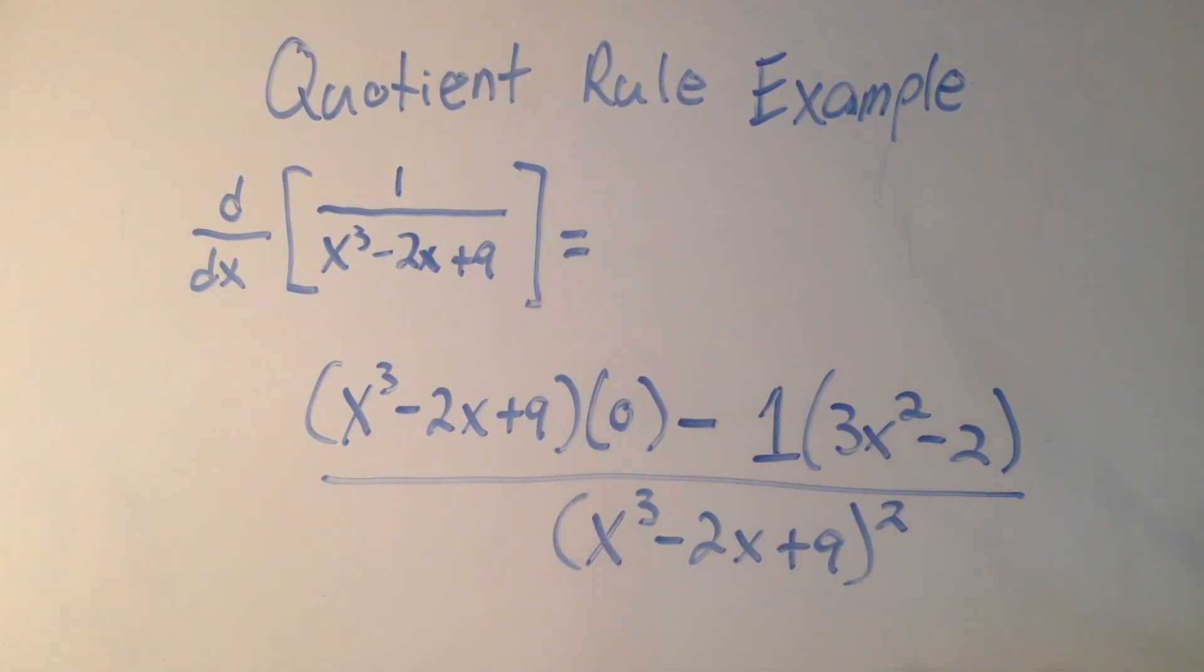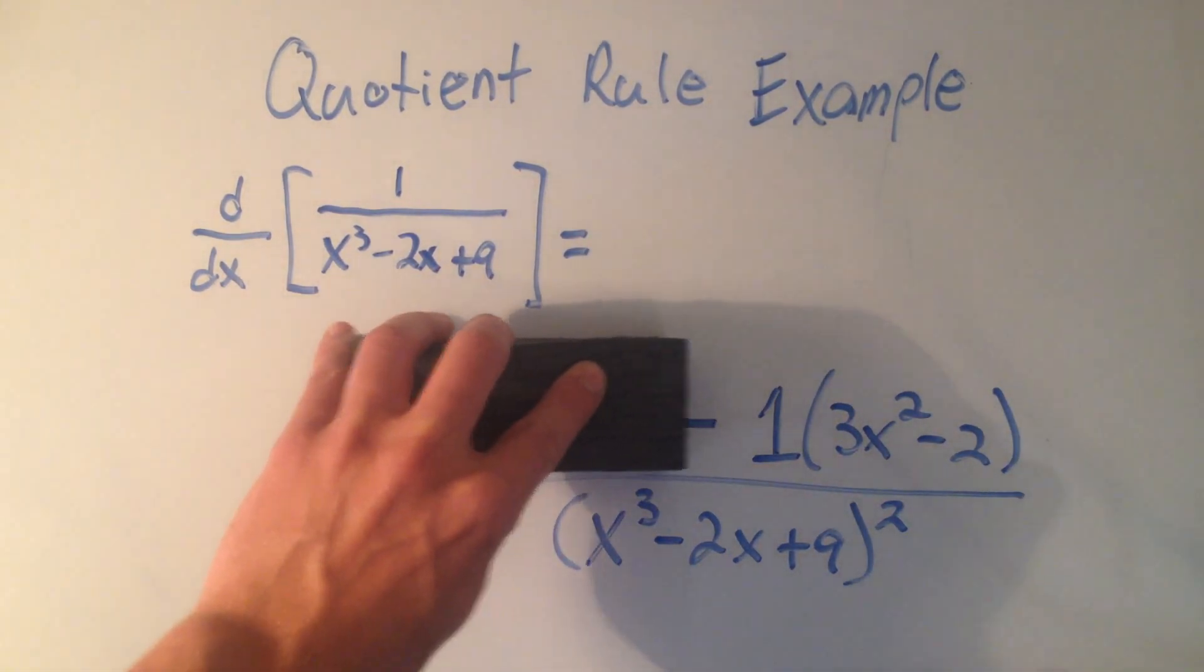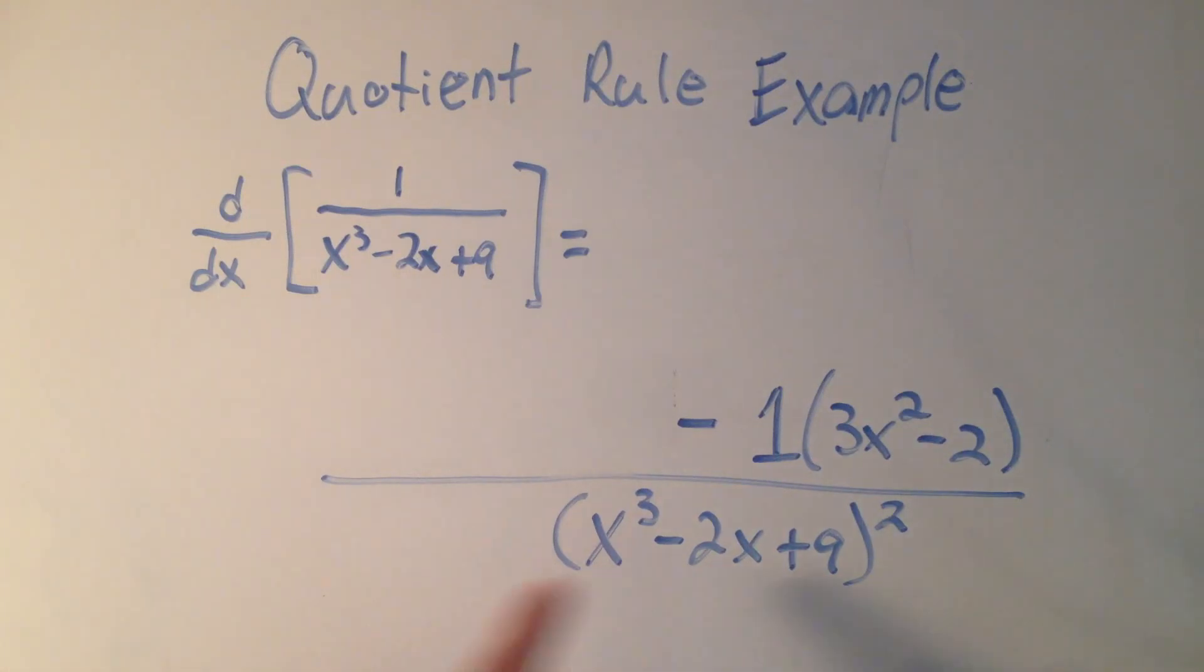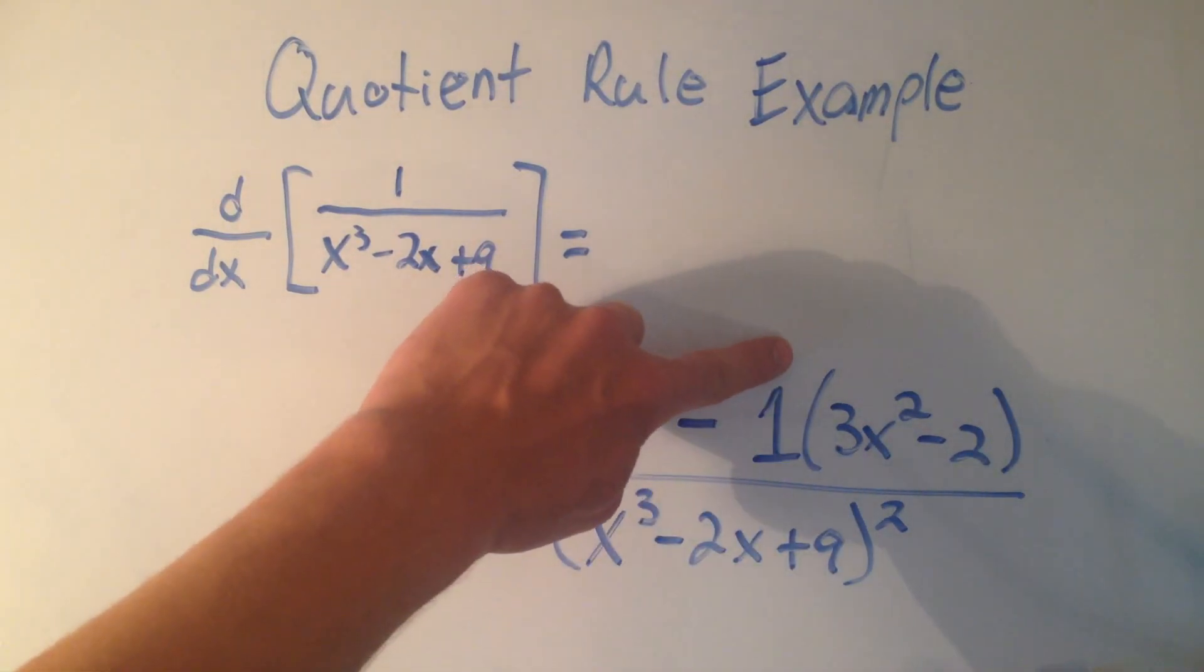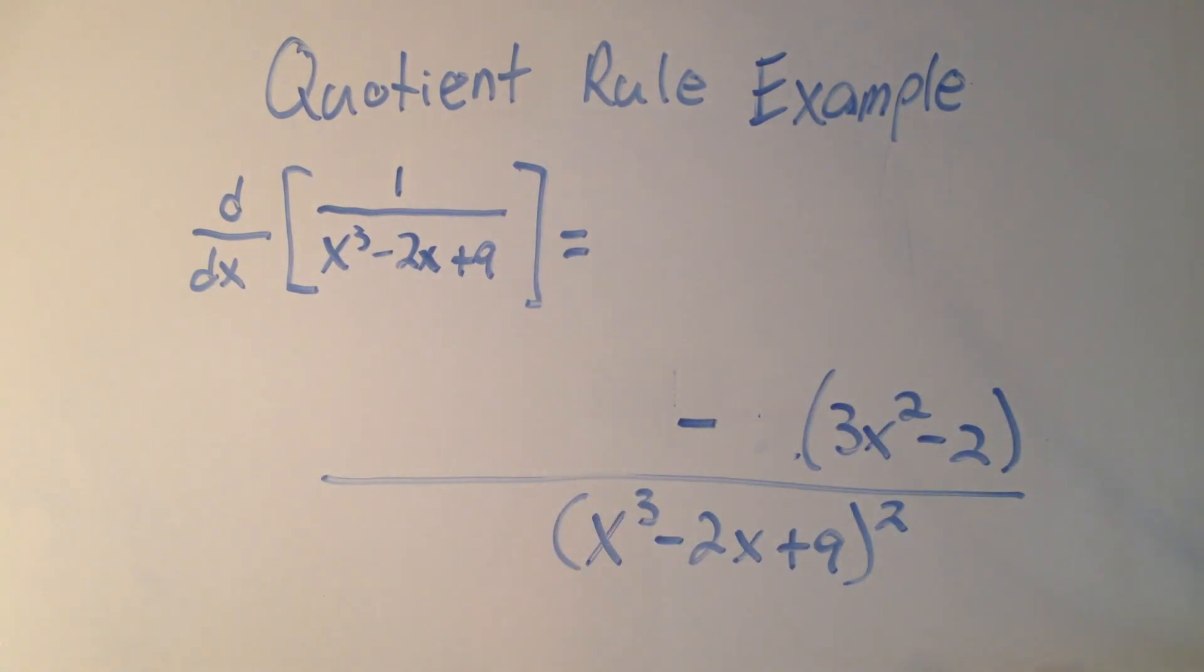I'll just rewrite the bottom and square it. Well this part is times 0, I don't need any of that. And if it's alright with you, 1 times something is the same as not writing the 1 there.